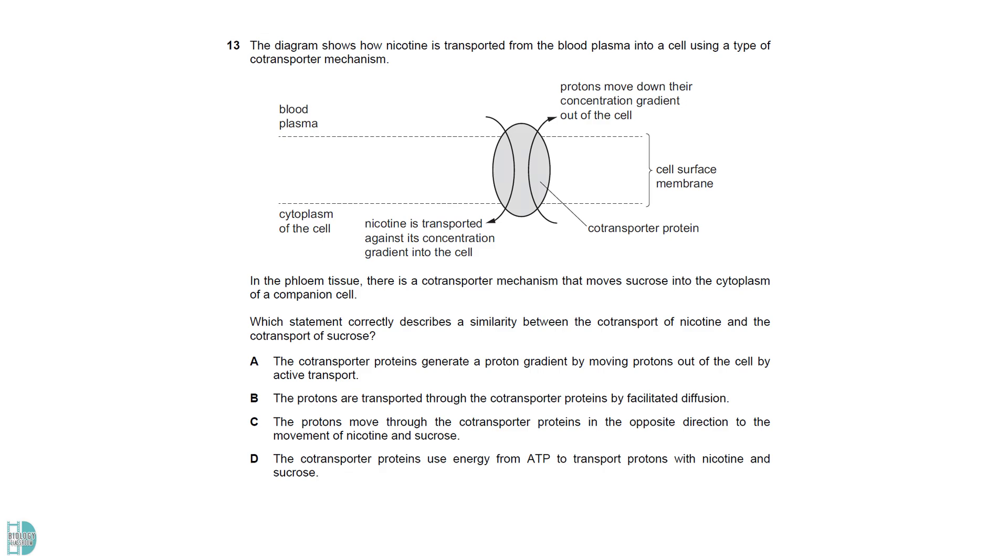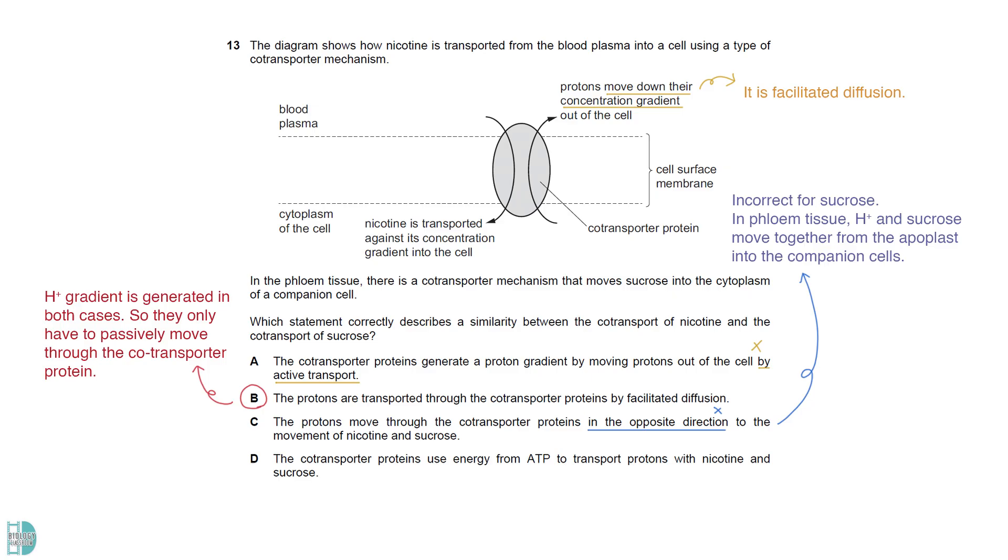A is wrong because the diagram shows that the protons move down their concentration gradient. It is facilitated diffusion, not active transport. B is correct. In both cases, a proton gradient has been generated, so they only have to passively move through the co-transporter protein. C is correct for this diagram, but incorrect for sucrose. In phloem tissue, protons and sucrose move together from the apoplast into the companion cells. D is wrong. The co-transporter protein facilitates the diffusion of protons, a process that does not require energy.